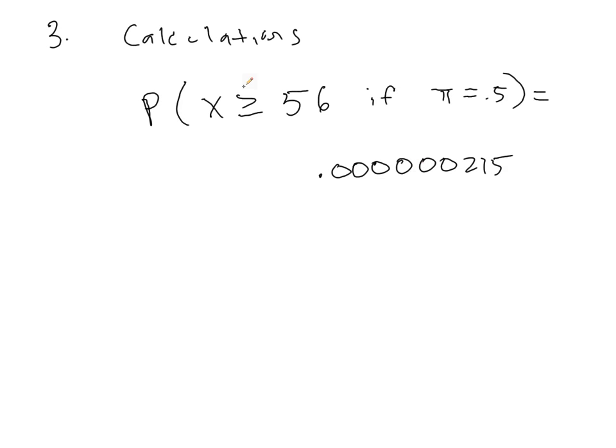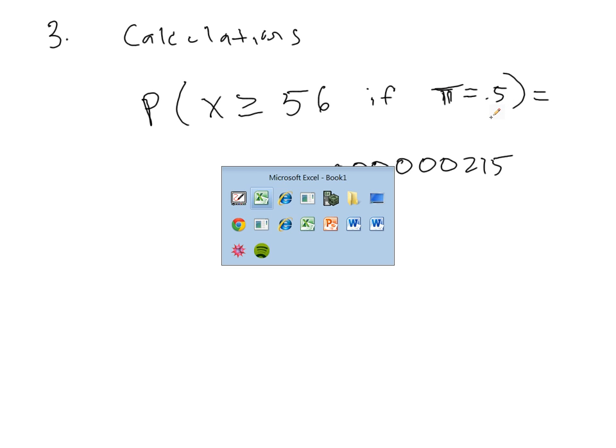So what does this mean? Well, the probability of seeing something like this, if in fact there's a 50% chance of success, is very, very unlikely. In fact, it's almost unheard of to see 56 or more detection kits successfully catch the lethal gas if there's only a 50% success rate.